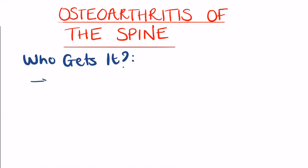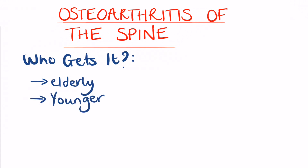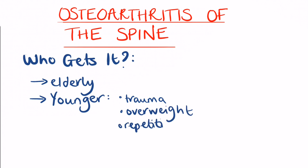So who gets osteoarthritis of the spine? Characteristically it occurs in older people, however it is possible to occur in younger people, and this can be a result of trauma or a patient being overweight. It can also occur more frequently in people who undertake activities that put repetitive stress on the spine itself.